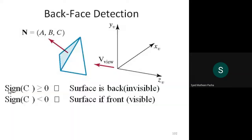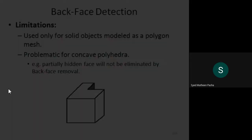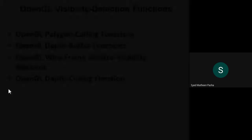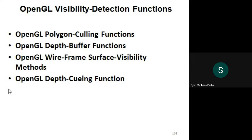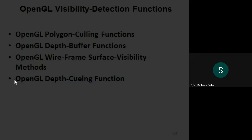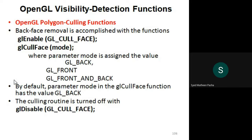Moving to OpenGL visibility detection functions, we study how OpenGL visibility detection functions work. There are four important functions defined in OpenGL visibility detection: the OpenGL polygon culling function, the OpenGL depth buffer functions, OpenGL wireframe surface visibility methods, and depth viewing functionality.